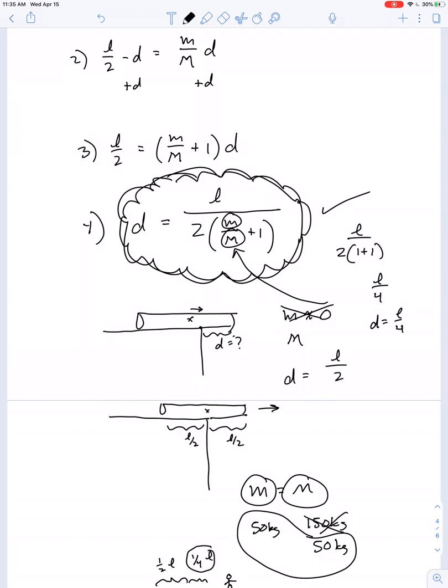So if you want to solve for it given the values we gave in this problem, give it a shot. We said lowercase m is 50 kilogram, capital M is 150 kilogram and L was 10 meters. See what you get as an answer. Thank you.